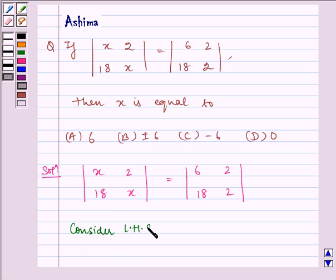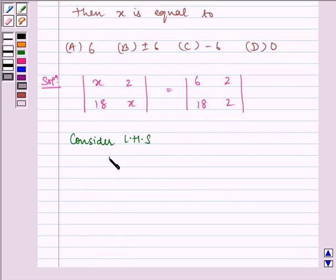which is |x 2; 18 x|. On solving, this gives x² - 18×2,